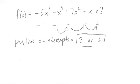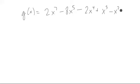Now let's look at another example. What if we had g(x) = 2x^7 - 8x^5 - 2x^4 + x^3 - x^2 + 5x - 11. So let's look at this.